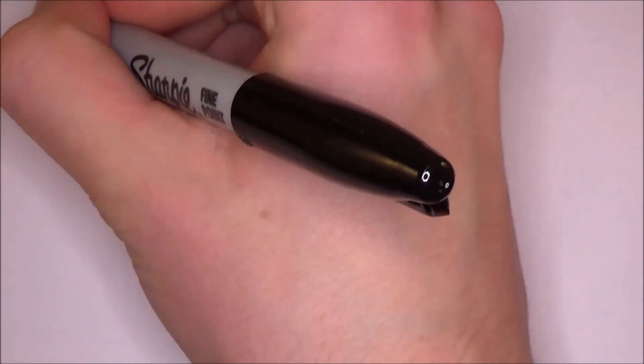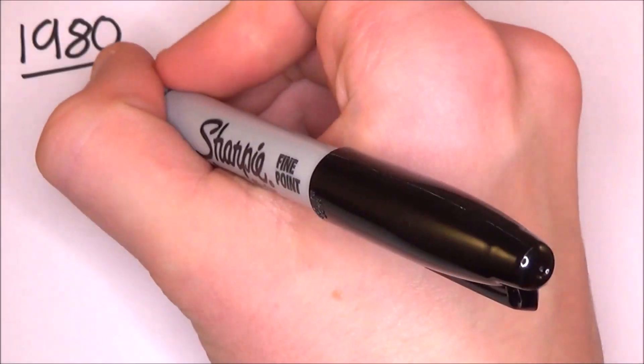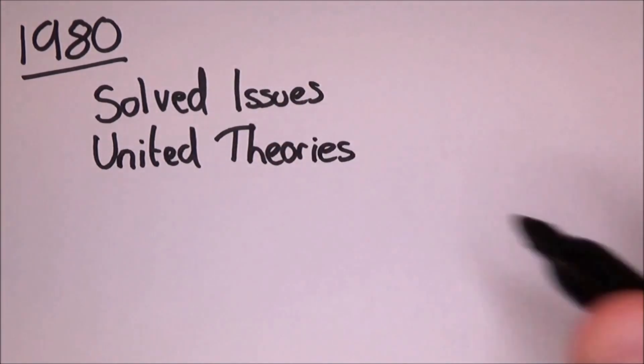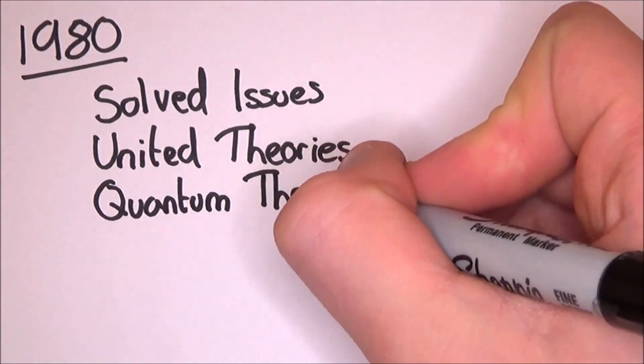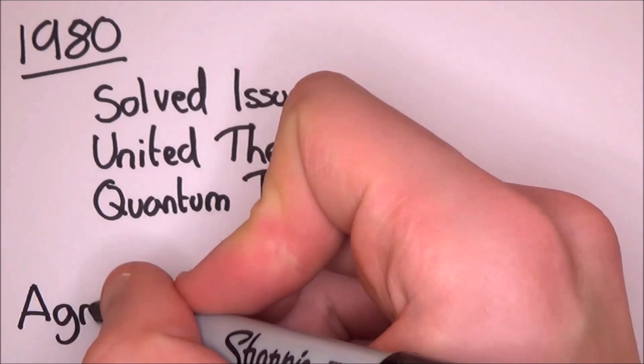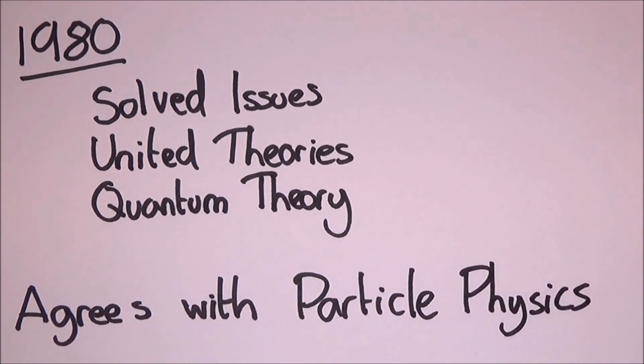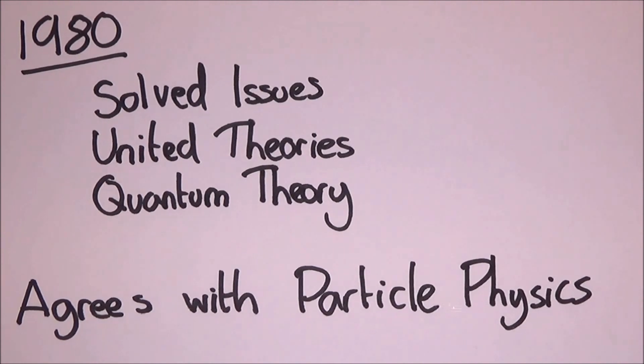While it gained precedence in 1990, it was actually established in the 1980s. It earned the success due to the fact that it solved so many issues about the nature of the universe. It united other theories, and it worked with quantum theory, which was developed independently by particle physicists and don't rely on any cosmological studies.